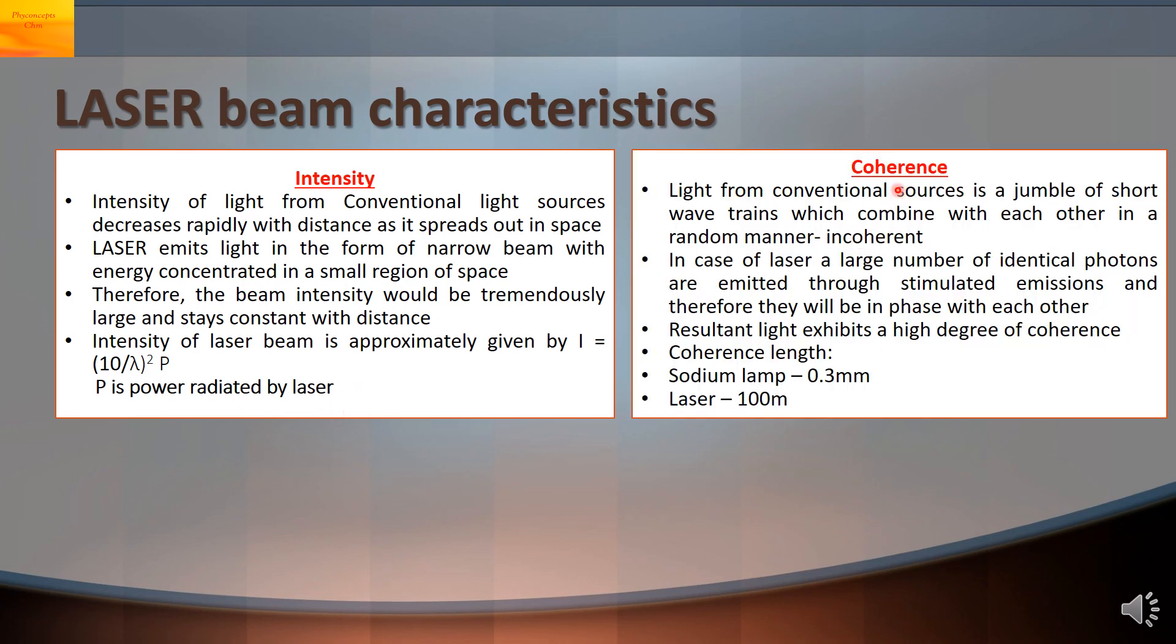Next is coherence. Light coming from conventional sources is a jumble of short wave trains which combine with each other. They are not all in the same phase. They are moving in random directions and hence the light from conventional sources is incoherent.